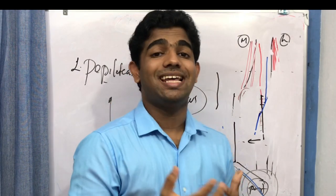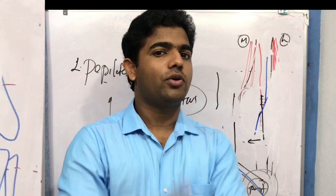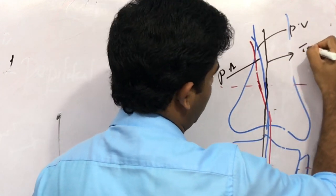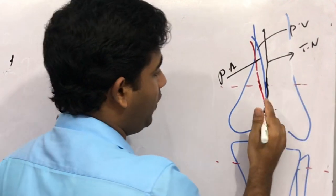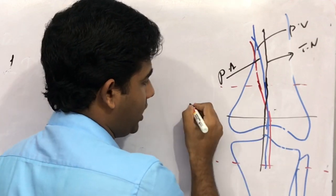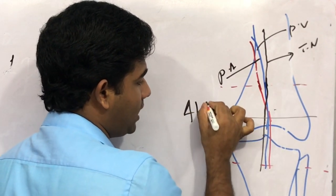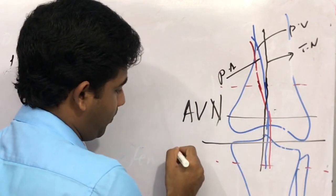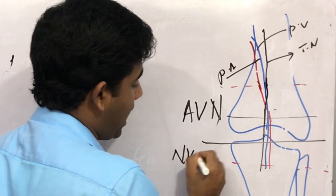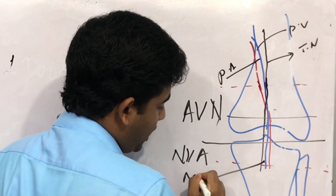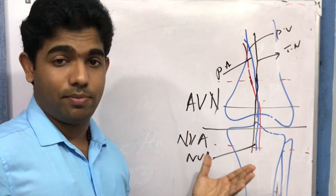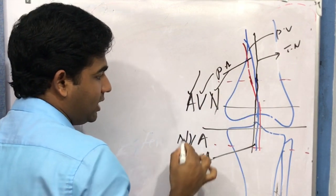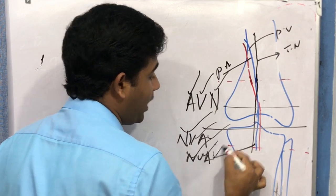An important mnemonic for the arrangement of vessels and nerve in the popliteal fossa: in the upper part of the fossa, from medial to lateral, the order is Artery–Vein–Nerve (AVN). In the middle and lower parts, the order is Nerve–Vein–Artery (NVA). Just remember: upper part AVN, middle and lower parts NVA.